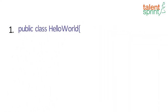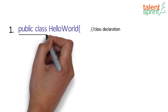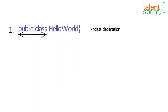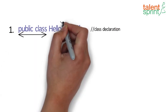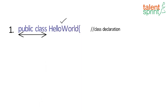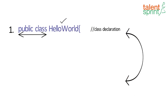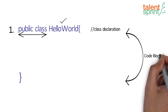The very first line of code here is the class declaration, where 'public' and 'class' are the keywords that simply say that this is a public class, followed by the name of the class, that is 'HelloWorld'. Then we start the curly braces indicating the piece of code that goes inside this class. This is also referred to as a block of code.